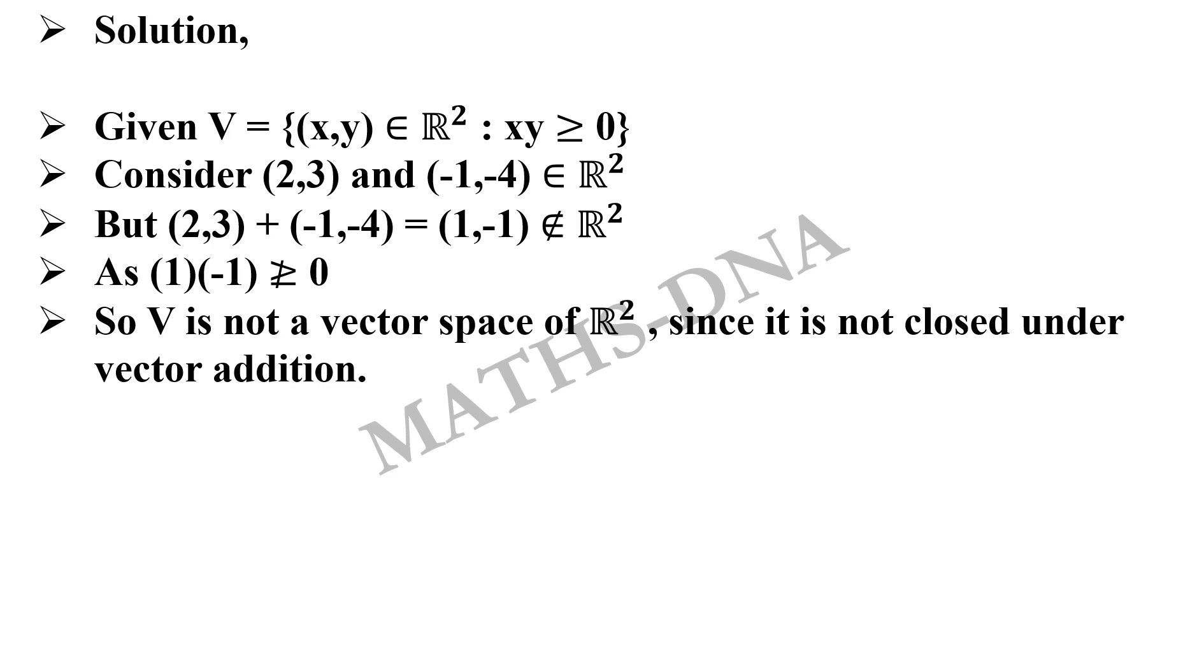Remember, when you are verifying whether a given space is a vector space or not, the first property you check is closure under vector addition. Even though it is option D in this, you need to verify as per the rules. So, the correct answer is option D.